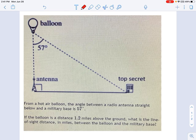So one thing we're given is this angle 57 degrees. You can see that right up here. Another thing we're given is the distance between the balloon and the ground right here, 1.2 miles above the ground. So I'm going to label that on this graph. We're just going to call that 1.2 right there.